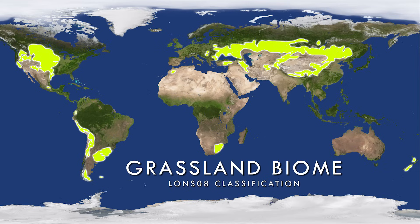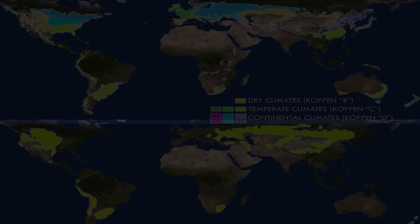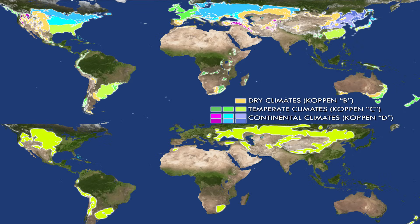Grassland areas occur in relatively temperate, drier climates, either in the mid-latitudes or in high-altitude regions such as the Himalayas and Andes, where rainfall is insufficient for tree growth, or where historical conditions such as pervasive fire or large animal grazing have prevented trees from gaining a foothold. There is no one Köppen climate type that matches global grassland distribution, with continental and cool semi-arid zones along with humid and highland subtropical zones and even oceanic areas having grasslands.